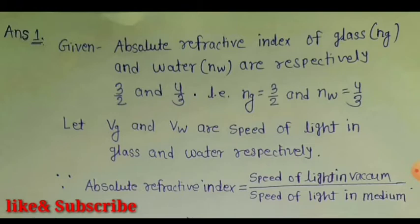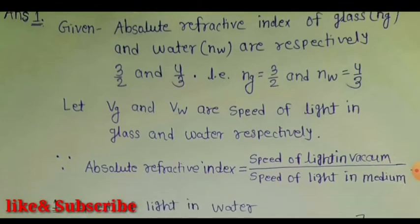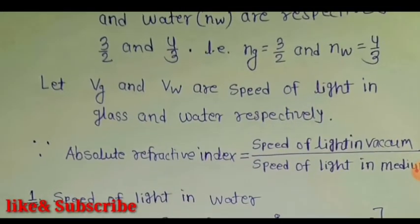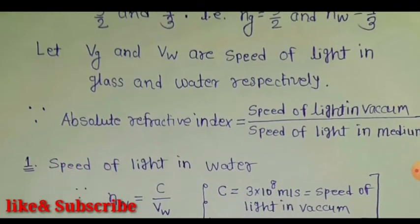The refractive index of glass and water are 3/2 and 4/3 respectively. First we write the given values, then we assume that VG and VW are the speed of light in glass and water respectively. According to the formula, the absolute refractive index is equal to the speed of light in vacuum divided by the speed of light in the medium.